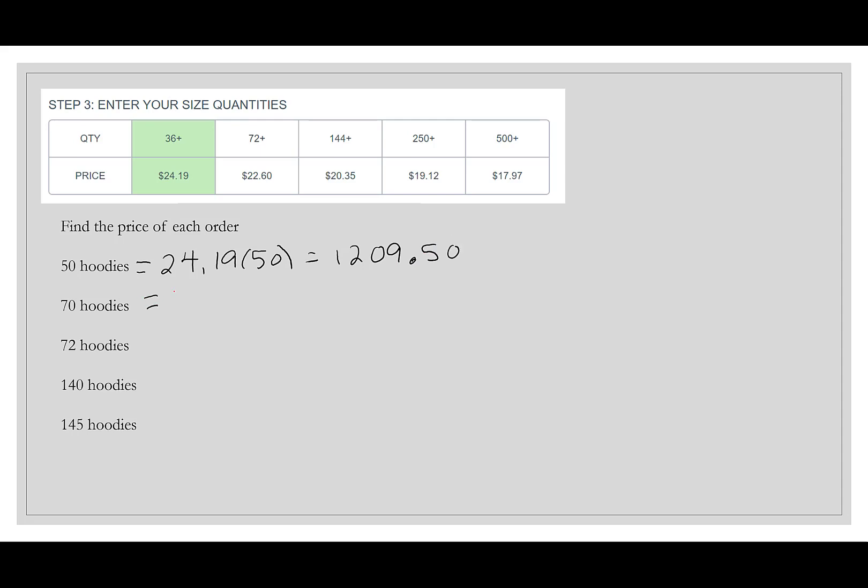If we change that to 70, we're still paying $24.19 per hoodie, so this is $1,693.30. At 72 we get a new price: $22.60 times 72, and the price is $1,627.20. And look what just happened - we could buy 72 hoodies for less than we can buy 70 hoodies, so it makes sense to order those couple more to get a significant savings in our order.